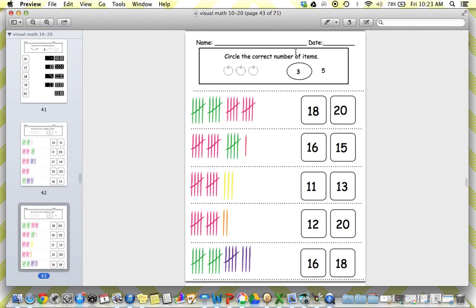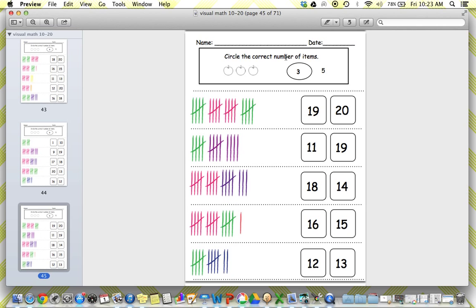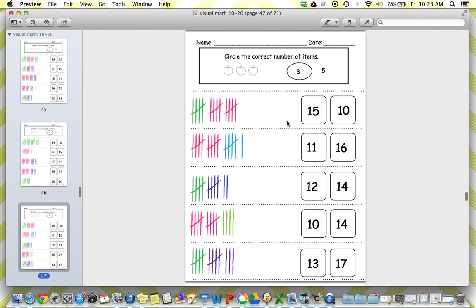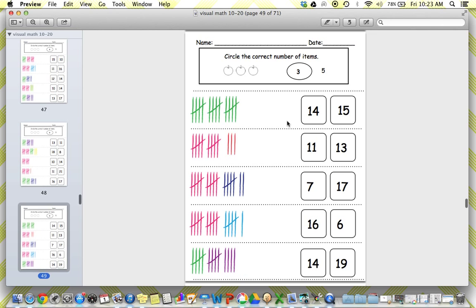Next is circling the correct number with tallies. Tallies are a great skill to work on because you do have to pay attention. And it kind of teaches counting by fives as well. So 10 through 20, circling the correct number.